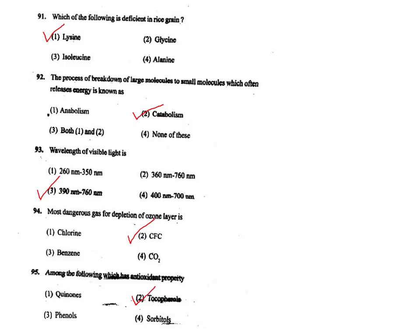Q91. Which of the following is deficient in rice grain? Rice is deficient in lysine. The correct answer is option 1.